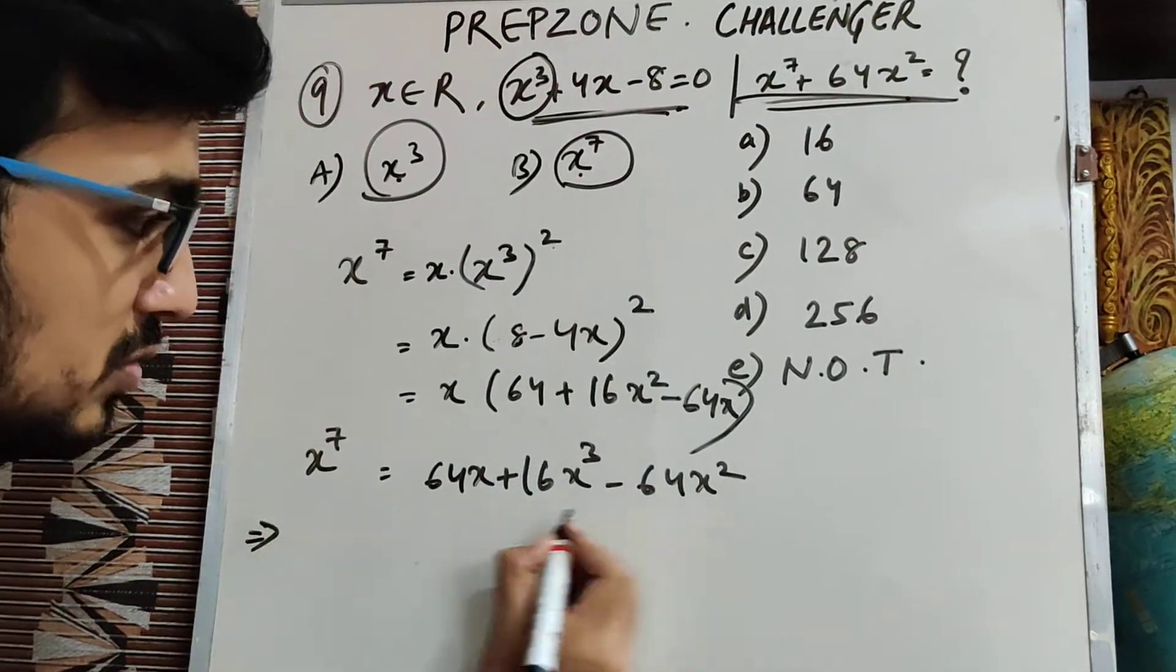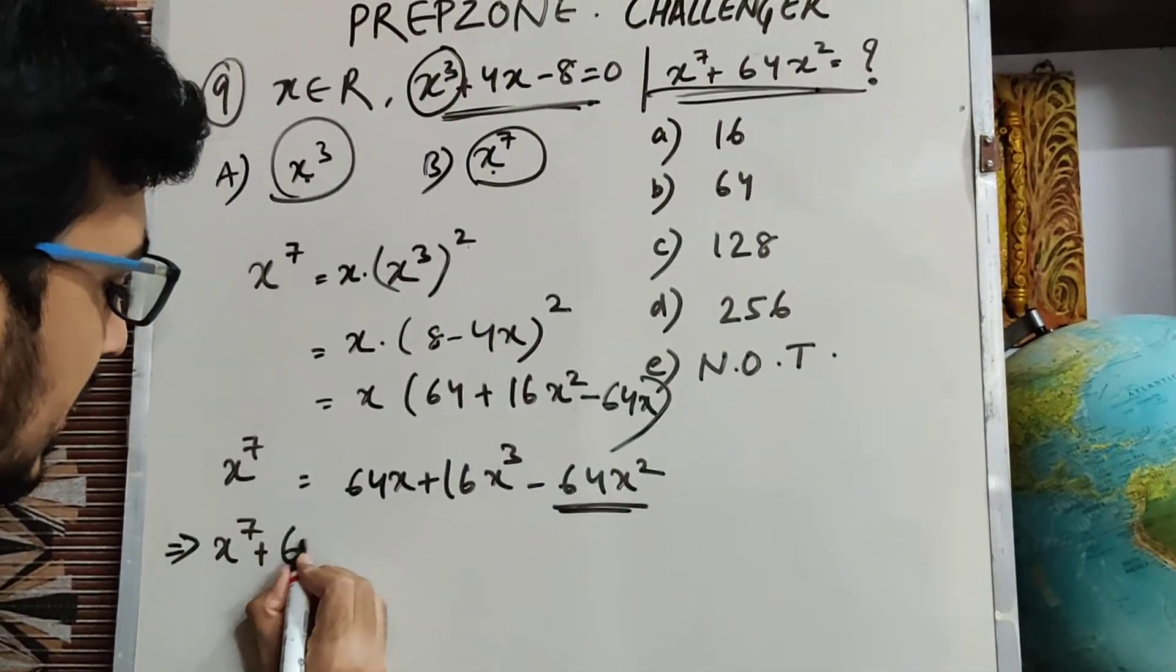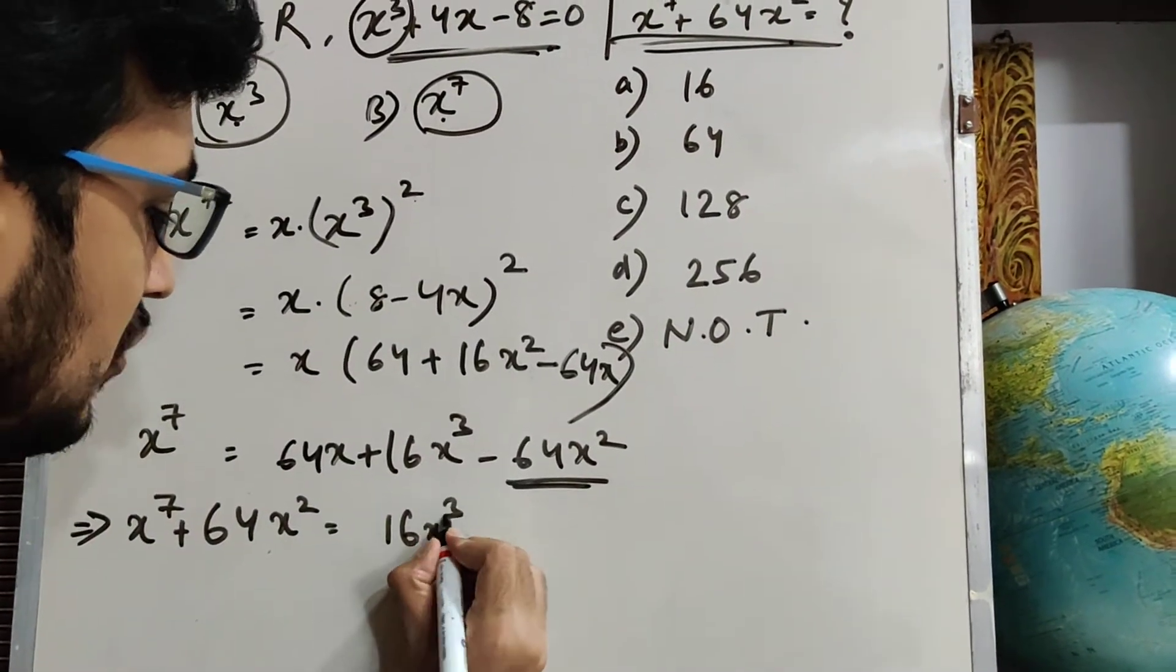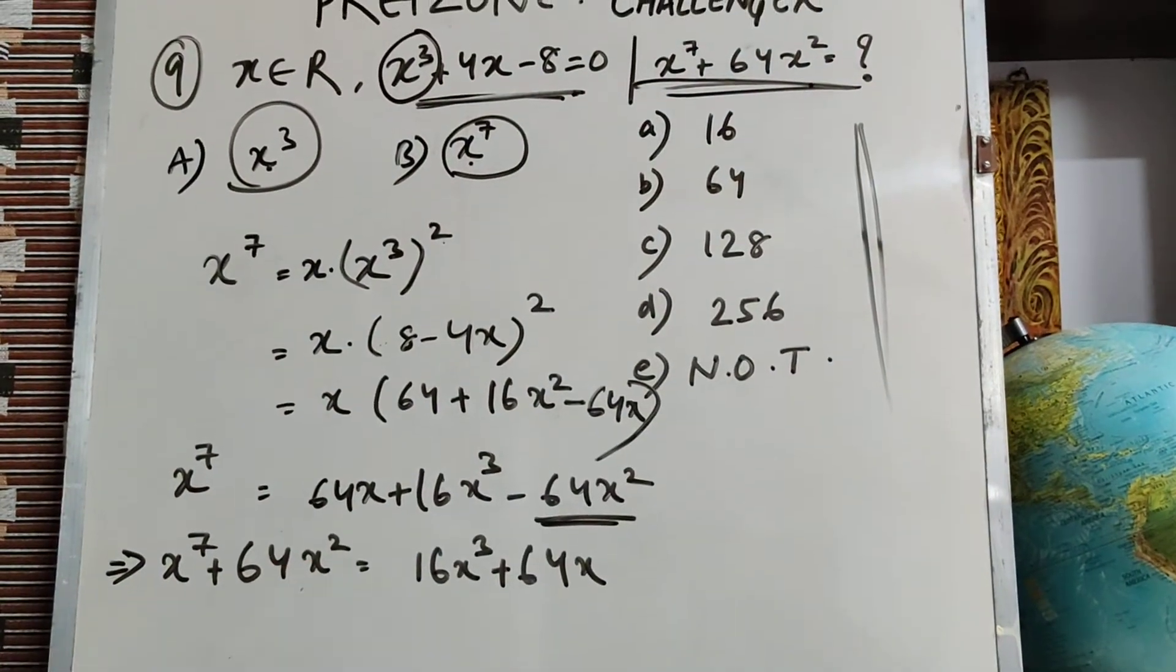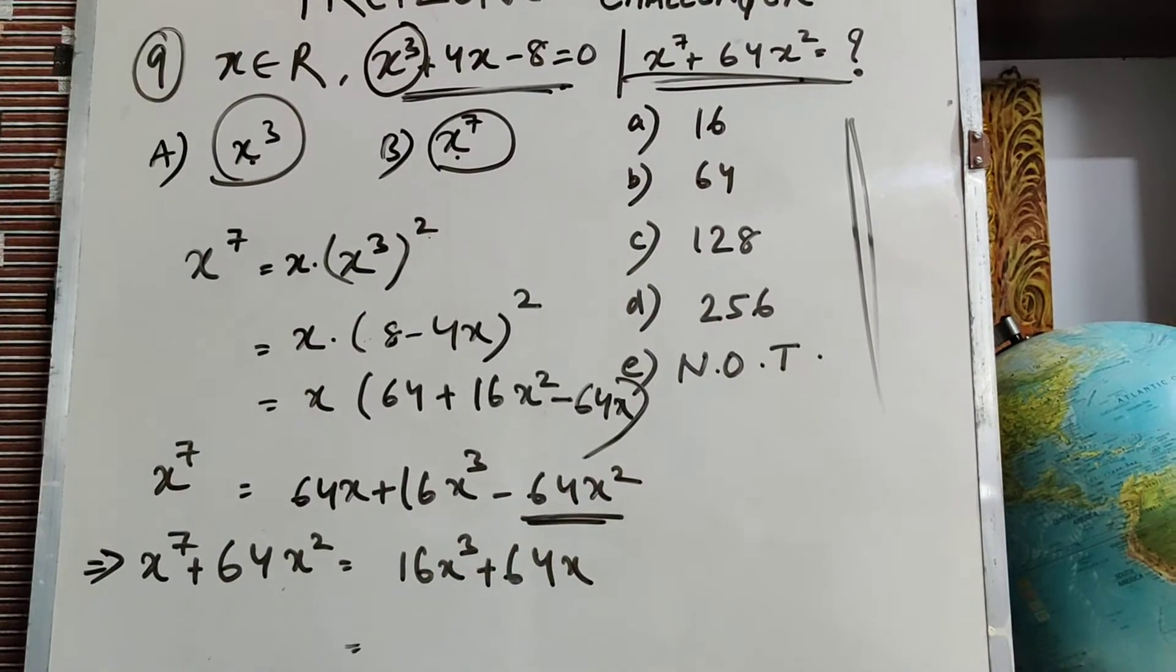This is x⁷. You have asked x⁷ plus 64x². So 64x² I have on the left hand side. So x⁷ + 64x² is equal to 16x³ + 64x. But I know I have to get rid of this x³. So what will I do? I will simplify it a little.